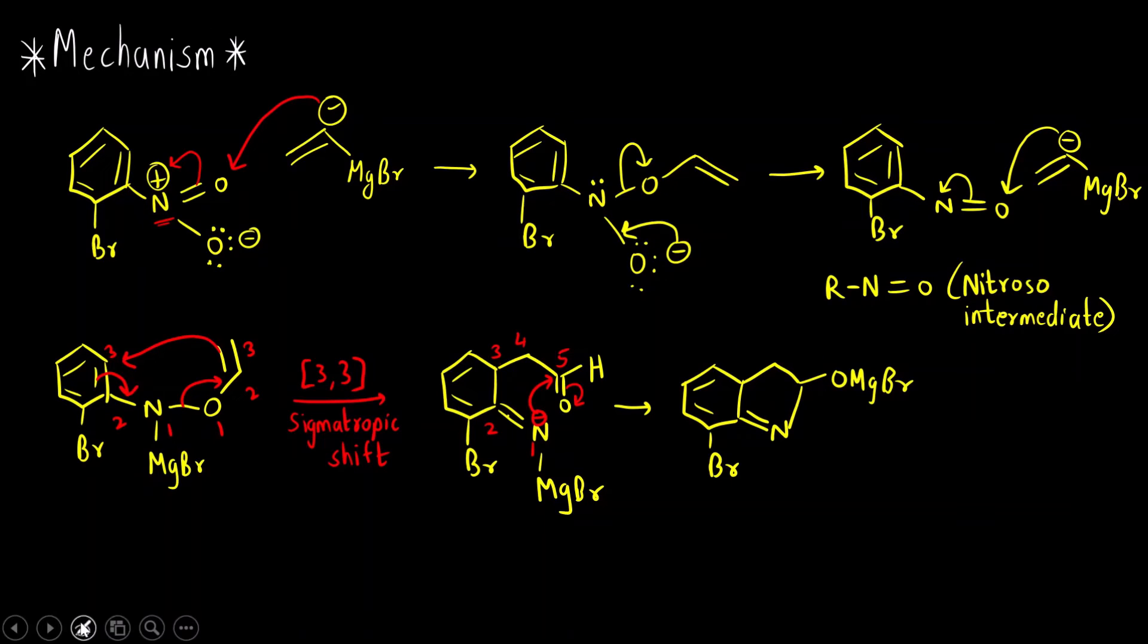Now you can see we have used two equivalents of the Grignard reagent. This is one equivalent. This is the second equivalent. And now we are going to use the third equivalent to bring back the aromaticity of this benzene ring. So the third equivalent we will use here. This is negative. This will pick up this proton and we will get the aromaticity of the benzene ring.